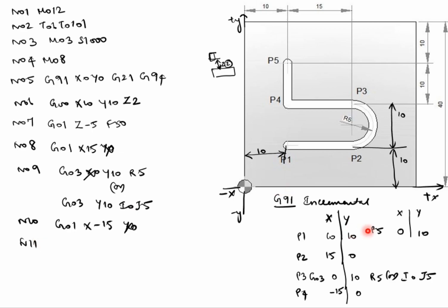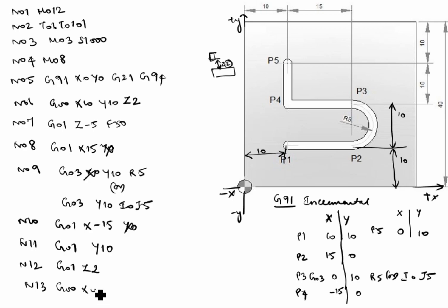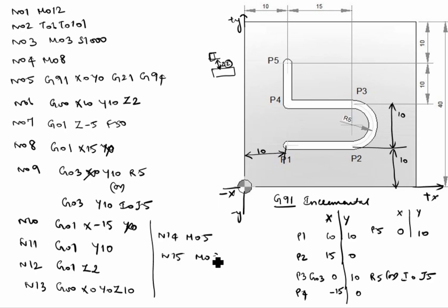N11: G01 Y10 — P5 is X0, Y10; no need to write X0, so write G01, Y10. N12: G01 Z2 — the tool comes 2mm above the workpiece. N13: G00 X0 Y0 Z10 — rapid mode, X0 Y0 returns to origin, Z10 is the tool 10mm above the workpiece. N14: M05 — spindle off. N15: M09 — coolant off. N16: M30 — end of the program. Thanks for watching this video.